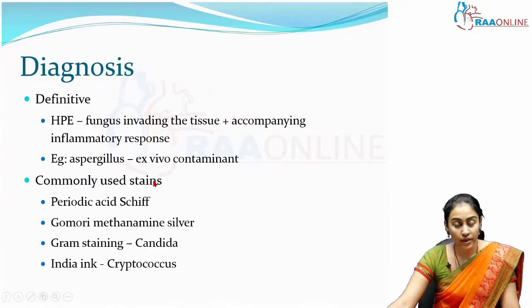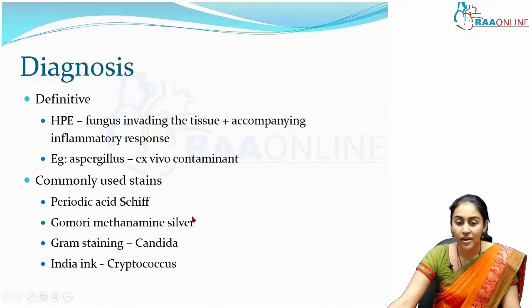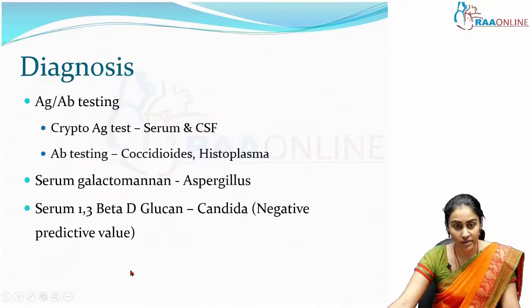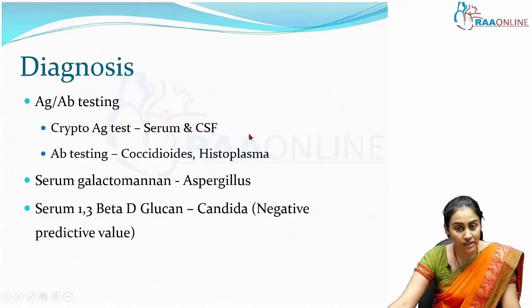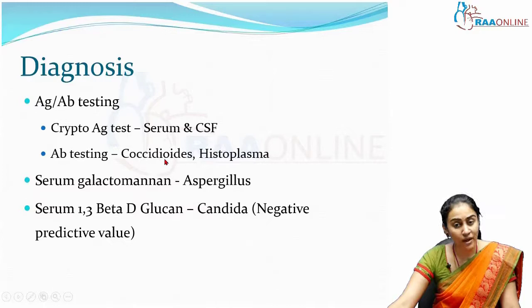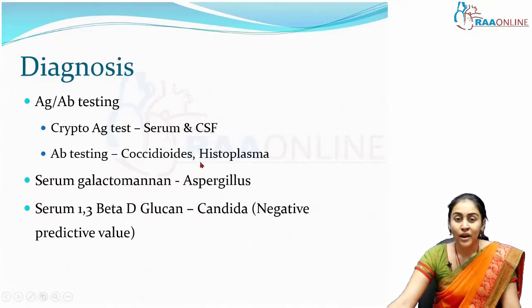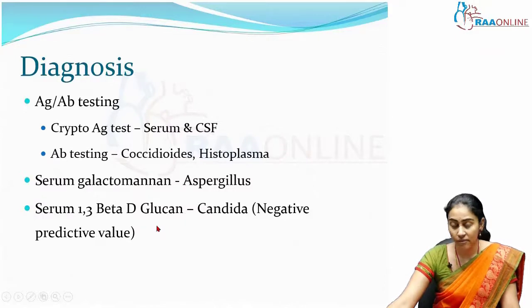Commonly used stains to diagnose fungal infections include periodic acid-Schiff, Gomori methenamine silver, and Gram stain. India ink is traditionally used for Cryptococcus. For antigen and antibody testing, cryptococcal antigen testing has now replaced India ink detection and can be done in both serum and CSF. Antibody testing is useful for coccidioidomycosis and histoplasmosis. Two tests have gained importance as surrogate markers of underlying invasive fungal infection: serum galactomannan, which is fairly specific for Aspergillus, and serum 1,3-beta-D-glucan, which is specific for Candida.